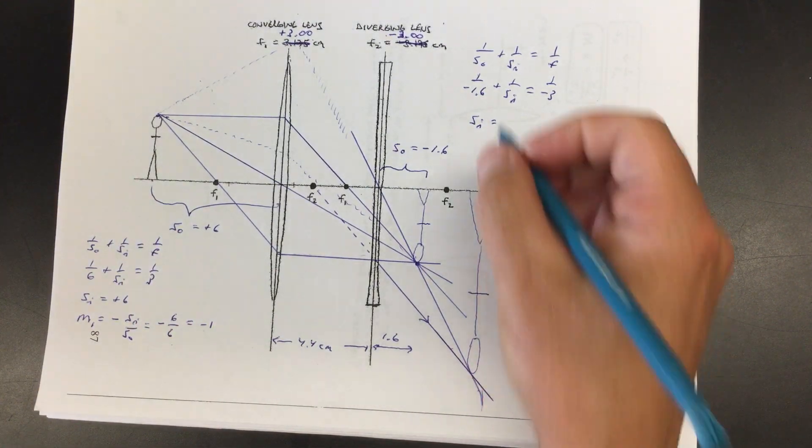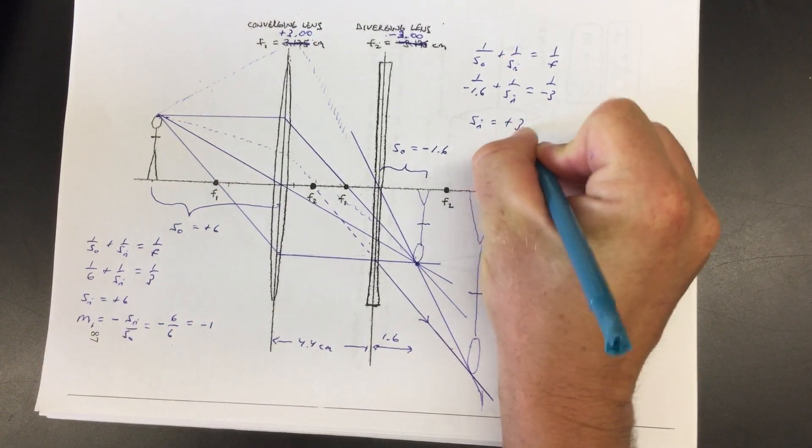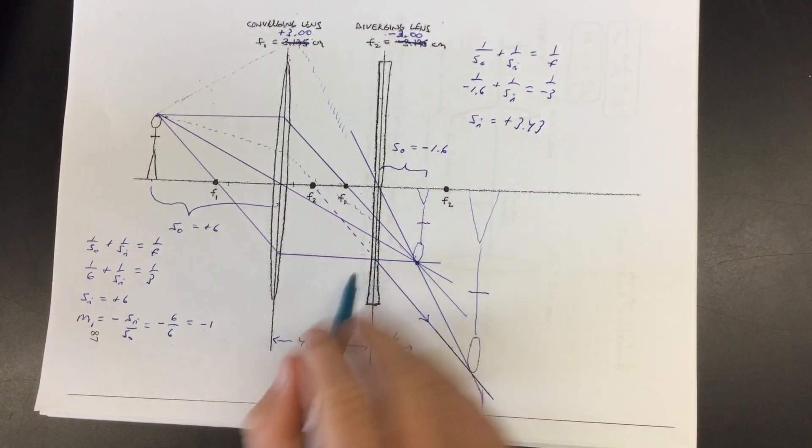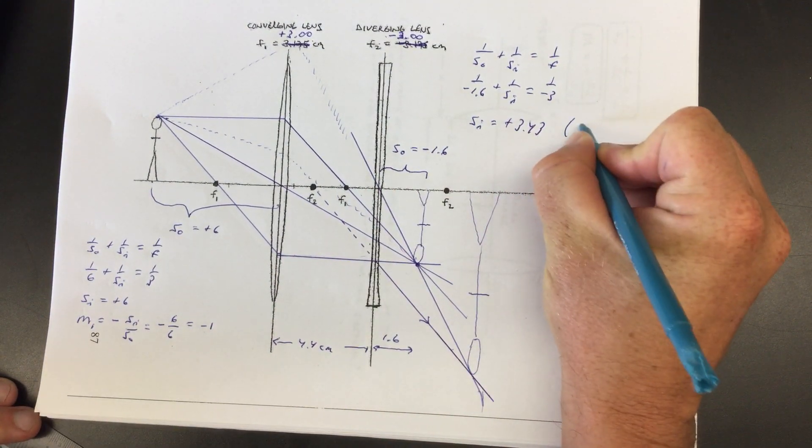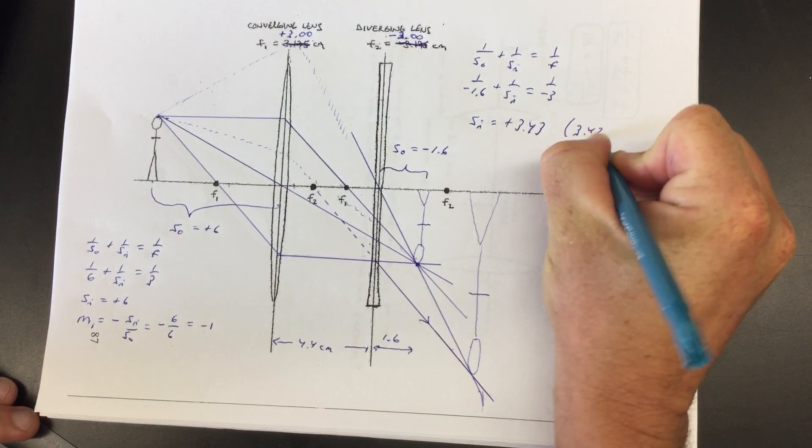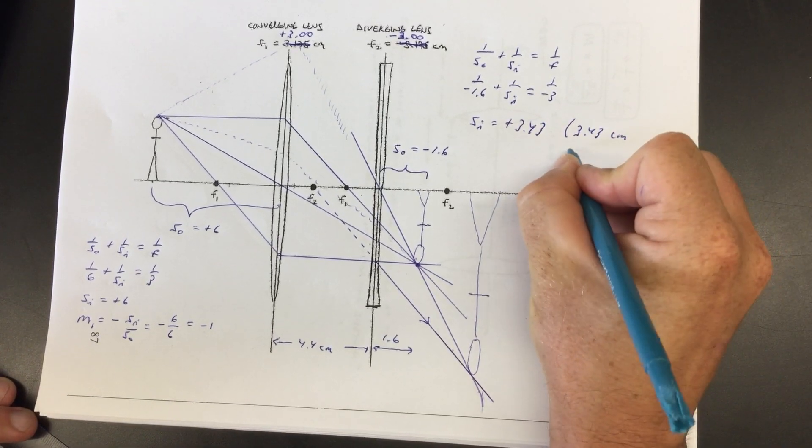So I get positive 3.43, which is supposed to be about where this, so, so in other words, the final image is supposed to be 3.43 centimeters, downstream.